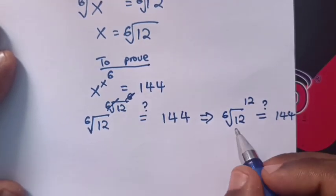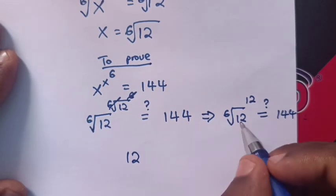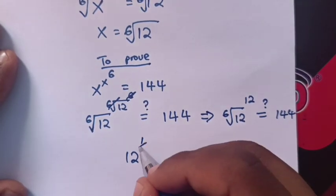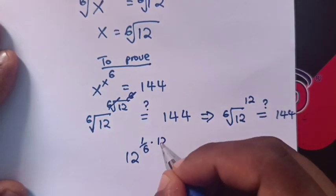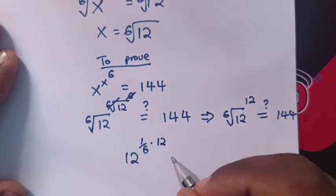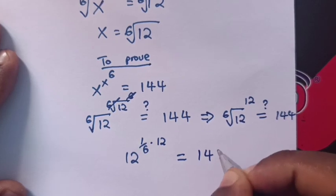Now from 12, this 6th root is the same as 1 over 6 power of 12. So this equals 144.